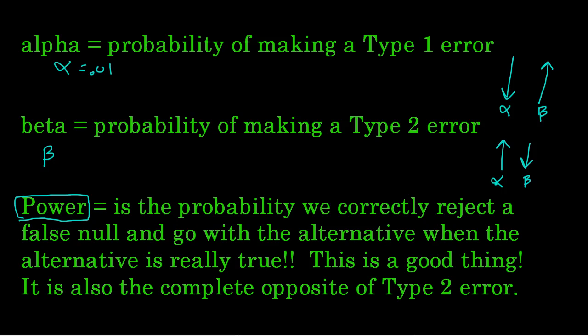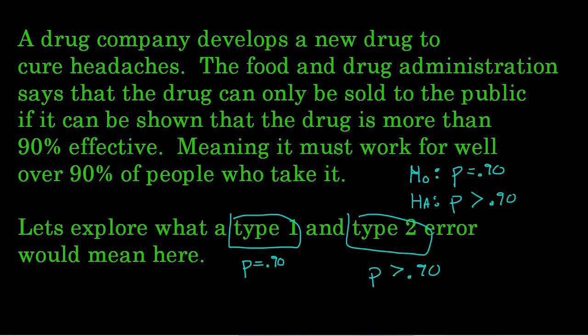Power says if he really is guilty, if he really did go to jail, we should see that. So let's talk about power in this example down here with our headache drug. If the truth really is that more than 90% of people will get cured with this drug, then power is our ability to conclude that. Concluding that the drug really does work and that the null should be rejected because the drug really does have a more than 90% effective rate. That's power. That's a good thing.